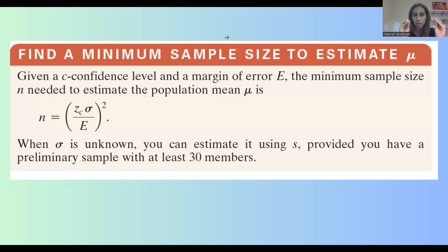First of all, we need some basic information. If you have c, confidence level, and a margin of error e, then the minimum sample size n is given by the following formula.